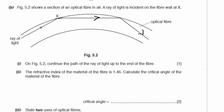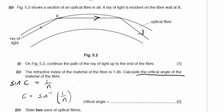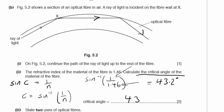The refractive index of the fibre material is 1.46. Calculate the critical angle. sin(C) = 1/n, so C = sin⁻¹(1 ÷ 1.46) = 43.2°, which rounds to 43° to two significant figures.